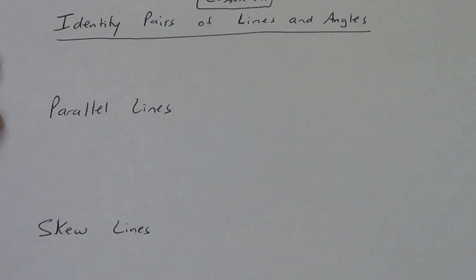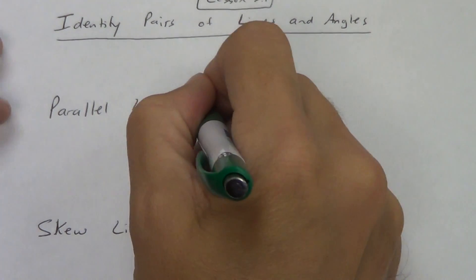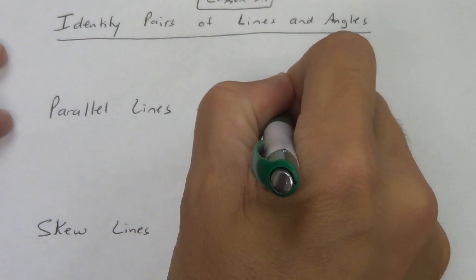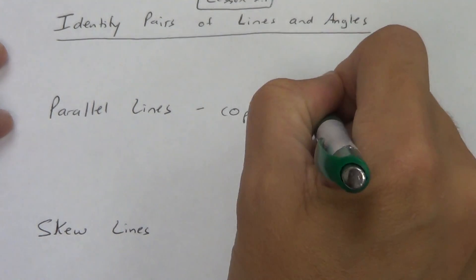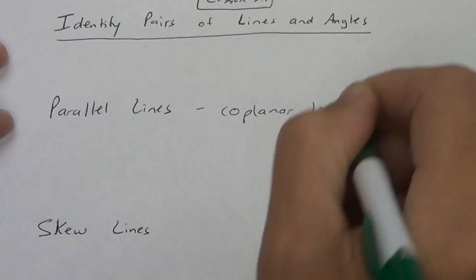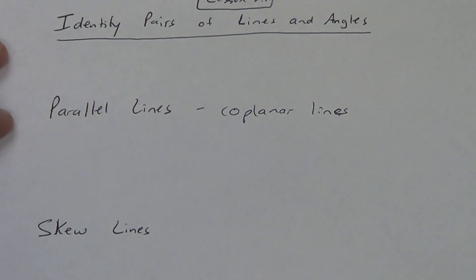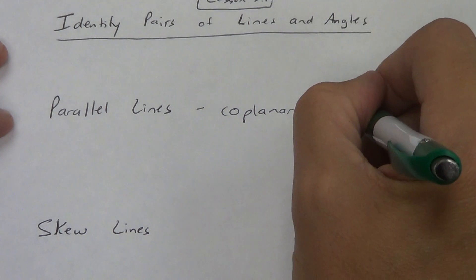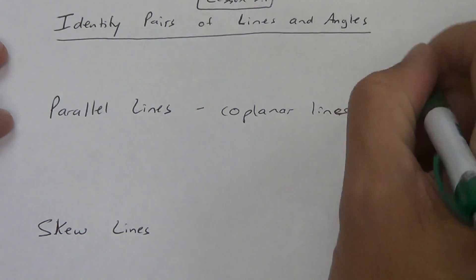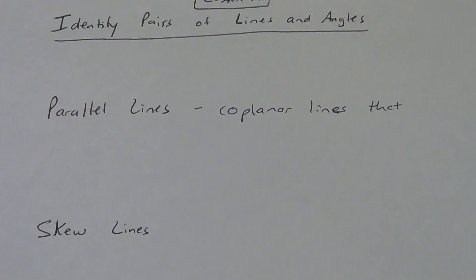So parallel lines — these are coplanar lines. Keep in mind the definition of coplanar means they lie on the same plane. Coplanar lines that never intersect.